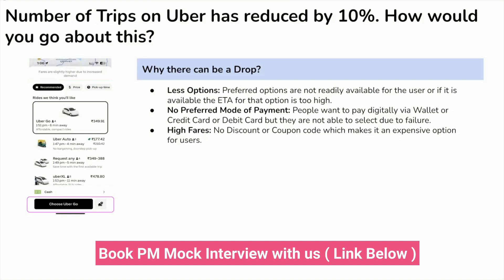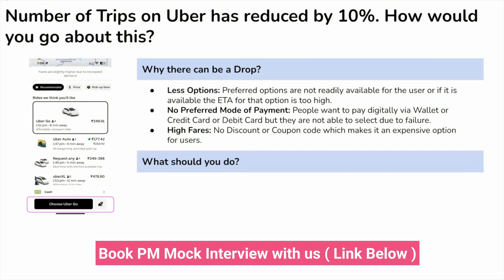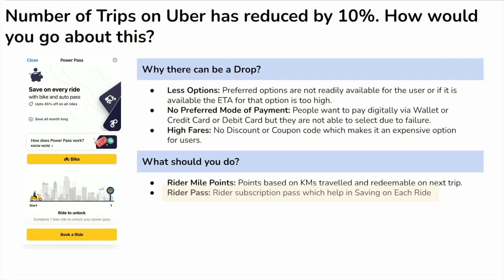So what should we do now? The first solution is a rider mile points program to retain users on the platform — when a user completes a trip, they earn ride mile points redeemable on their next trip. The second solution is a rider pass subscription, where users subscribe at a set price and receive a minimum discount for the entire month. This keeps users on the platform and prevents the number of ride requests from declining.